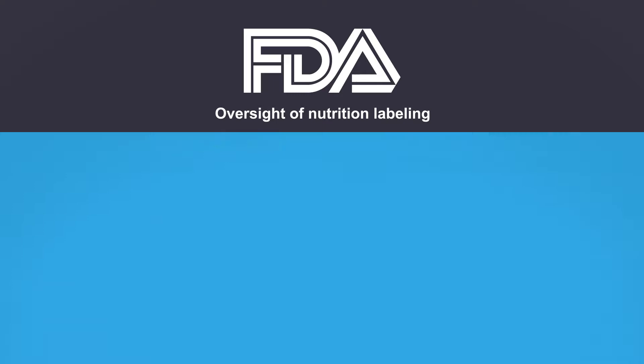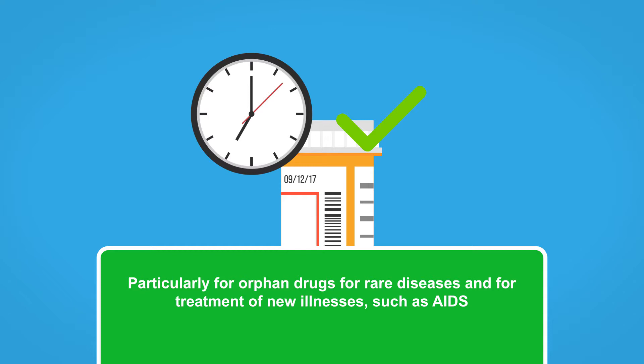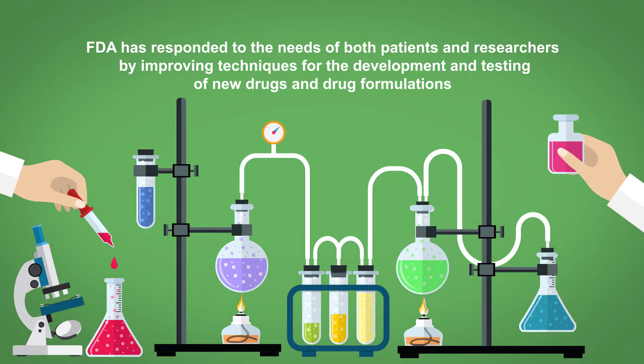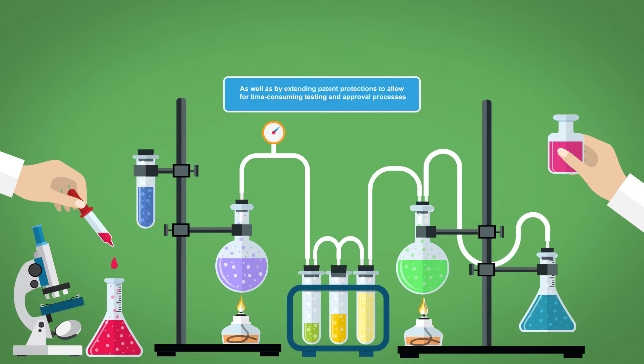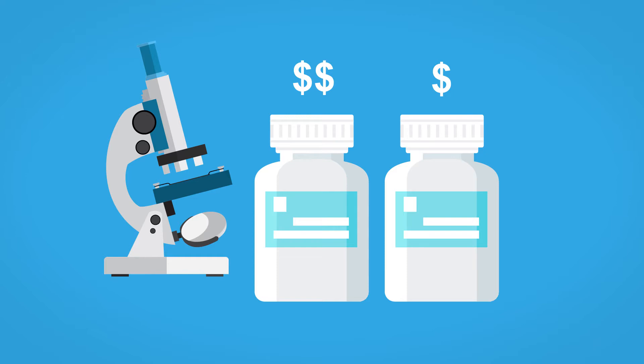In recent years, consumer demand and political pressures have led to FDA efforts to accelerate drug approval timelines, particularly for drugs for rare diseases and for treatment of new illnesses such as AIDS. FDA has responded to the needs of both patients and researchers by improving techniques for the development and testing of new drugs and drug formulations, as well as by extending patent protections to allow for time-consuming testing and approval processes. It has also modified the review processes for generic versions of drugs in order to encourage and facilitate the development of lower-cost alternatives to brand-name products.